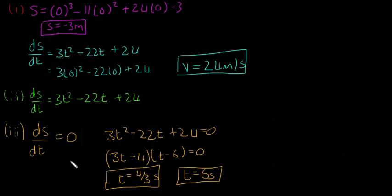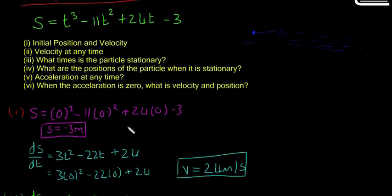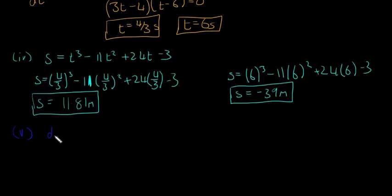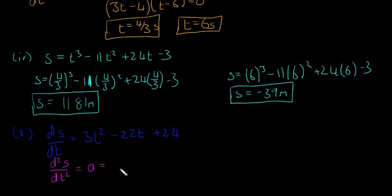Part 5 is the acceleration at any time. So remember, the acceleration is d²s/dt². So first, I'm just going to write ds/dt equals 3t squared minus 22t plus 24. And then d²s/dt², so it's the acceleration, I'm going to write is equal to a is going to be equal to 6t minus 22. And that's all it is for question 5. I'm just going to have to rub these out to make space for question 6.